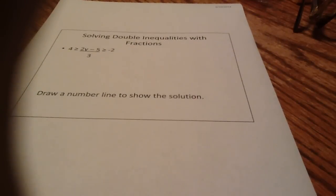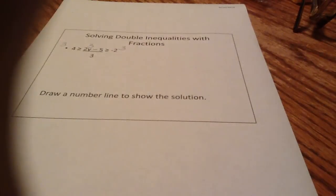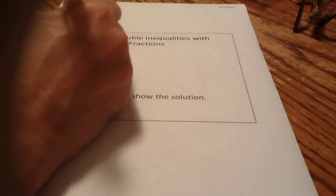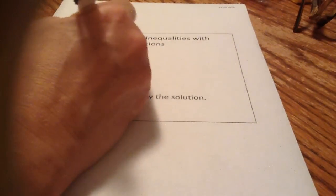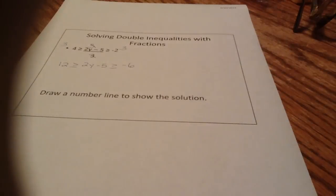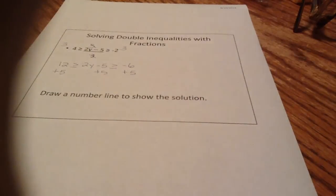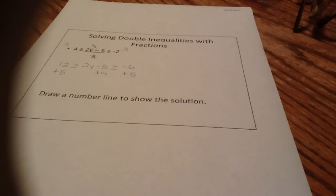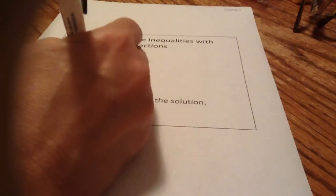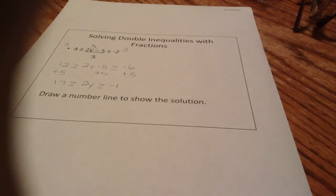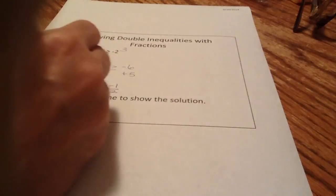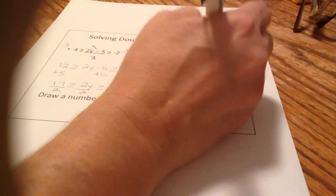Solving double inequalities with fractions — no different. Multiply through by the common denominator, which is 3 here. Do it on the left, middle, and right. 3 times 4 is 12, the threes cancel in the middle, giving 12 is greater than or equal to 2y minus 5, greater than or equal to negative 6. Since we multiplied by a positive, no symbols need to change. Next, add 5 to both ends: 17 is greater than or equal to 2y, greater than or equal to negative 1. Divide by 2 on both sides: 17 halves is greater than or equal to y, greater than or equal to negative 1 half.